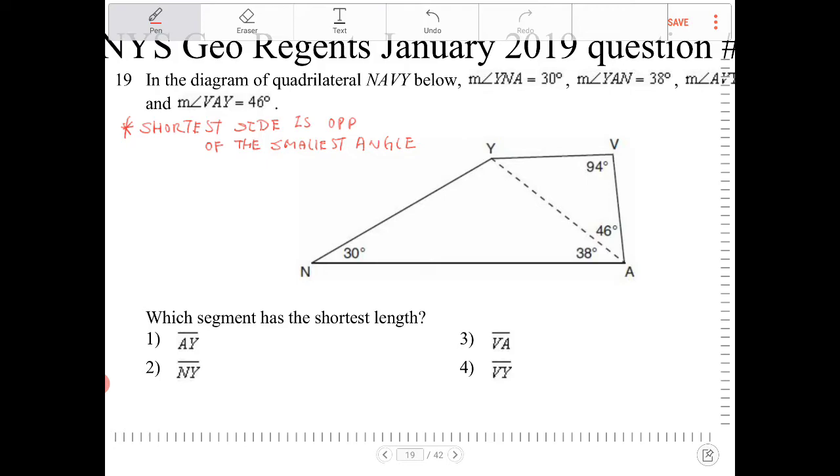The strategy here is we're going to apply the triangle inequality theorem one triangle at a time, and then through the transitive property, we are going to compare the results from both triangles and make our conclusions based on that.